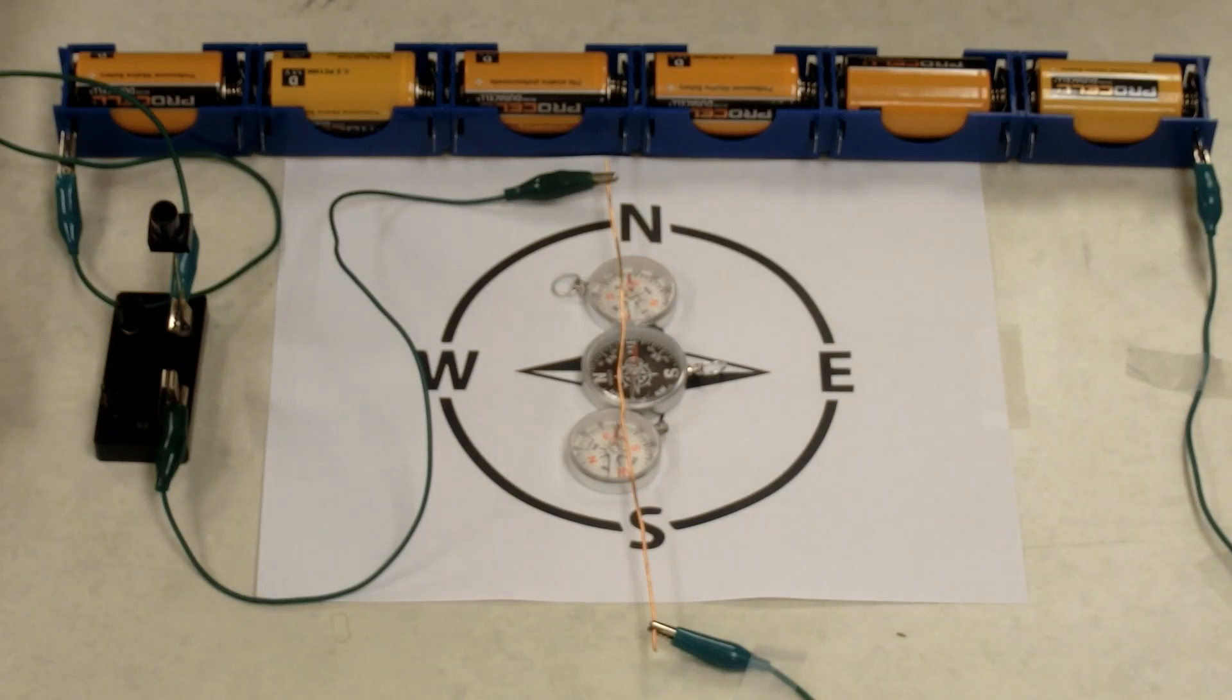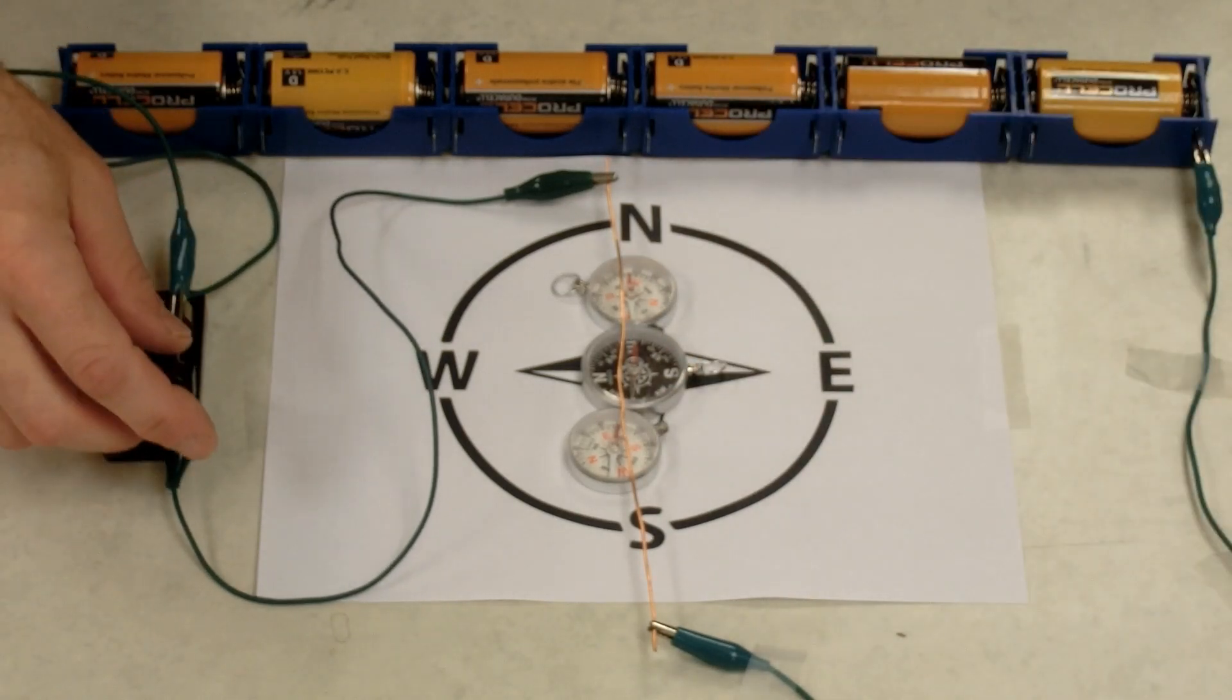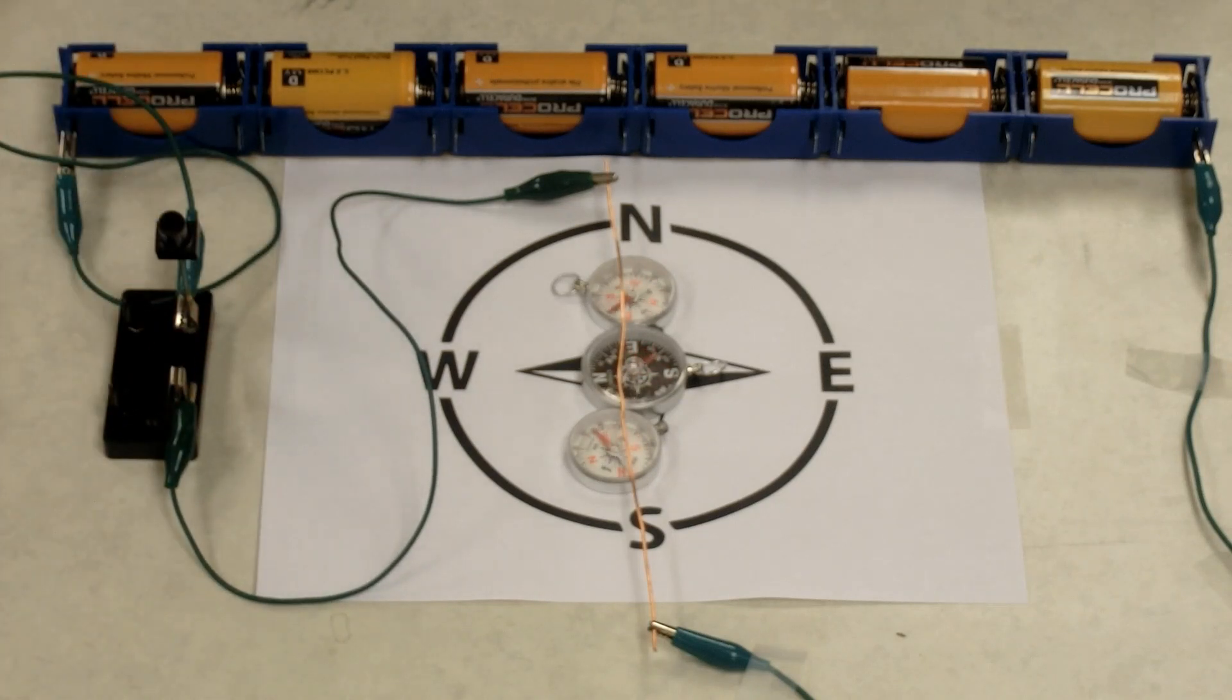This discovery paved the way for the invention of electromagnets, the telegraph, and the DC motor. Common bar magnets or permanent magnets don't have an on-off switch. These magnetic fields have an on-off switch. Turn on the current, we turn on the magnetic field. Turn off the current, we turn off the magnetic field.